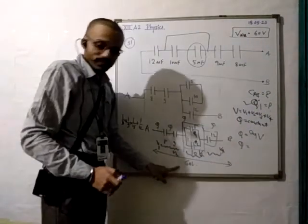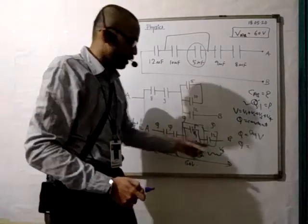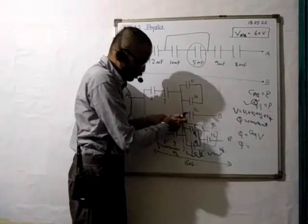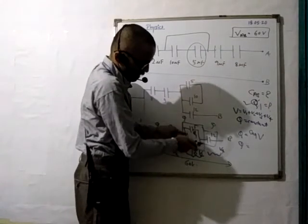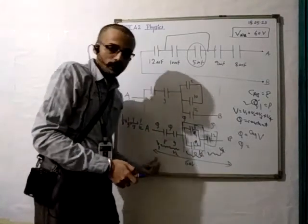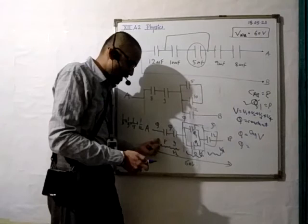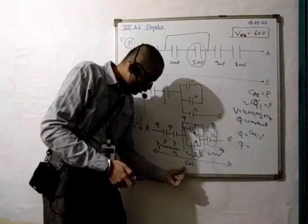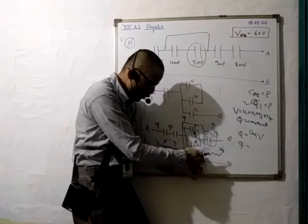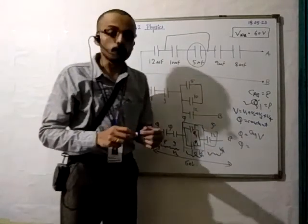So the series combination is 8, 9, 15 (5+10 in parallel), and 12. Find C_equivalent for that series. Once Q is found, it flows through the series. For the parallel branch of 5 and 10: find the potential across that branch (V3), then Q1 = C1 × V3 = 5 × V3. That gives you the charge on the 5 microfarad capacitor.